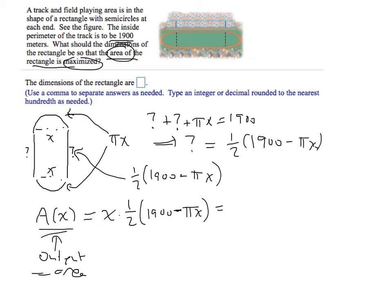If I write this in the form ax squared plus bx plus c, the x squared term should come first. The coefficient of the x squared term should be minus one half pi times x squared. Then there's an x term that comes from one half times 1900 times x, so it's probably smart to multiply one half times 1900 and get 950 times x.